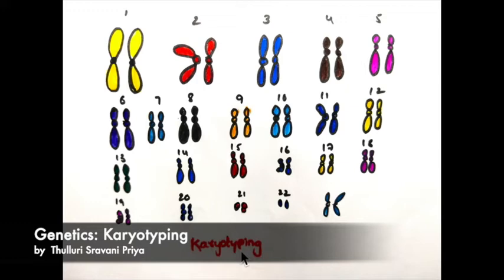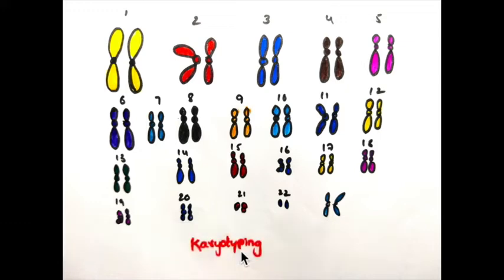Photographs are taken under the microscope, and after taking the photograph we cut it. In that photograph we see a number of chromosomes, so we cut those chromosomes and arrange them in a certain manner — that is karyotyping.